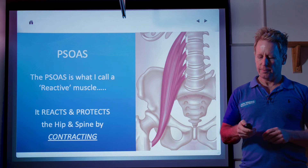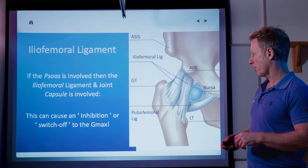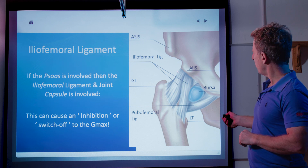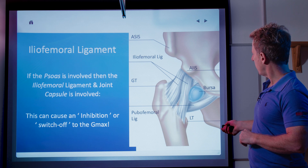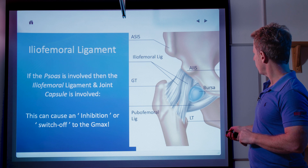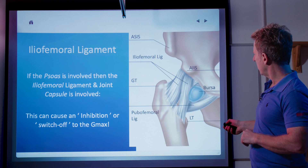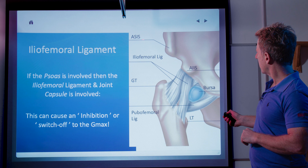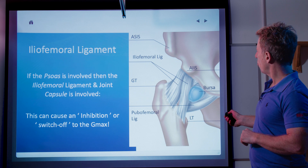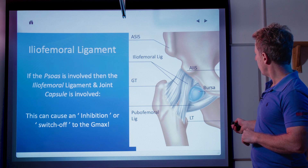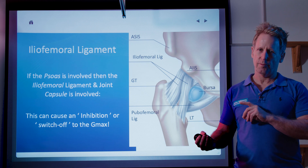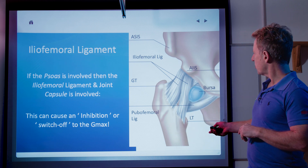Underneath the muscles you've got other structures — the ligaments. There's one of the strongest we've got called the iliofemoral, an inverted Y. We've also got the pubofemoral and one at the back called the ischiofemoral. This is the lesser trochanter, the LT. The GT is the greater trochanter. The ASIS is the anterior superior iliac spine where the rectus femoris and sartorius attach. And then we've got the iliopectineal bursa. So if you've got a problem with the ligaments, the back is involved.